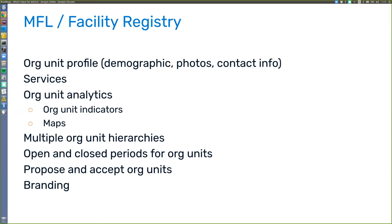Supporting multiple org unit hierarchies is a long-standing request — it has a single-digit Jira issue number it's been around so long. In a single country there may be health hierarchies, schools, different health program hierarchies, villages, communities, private facilities, and so on. This is a very large job spanning the entire system, which is why it hasn't been completed, but it's still on the list. Having open and closed periods for org units is another big one — right now we have an opening date but we don't support facilities that open and close periodically.